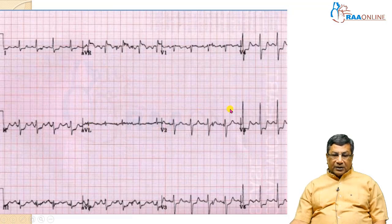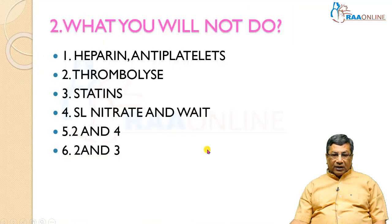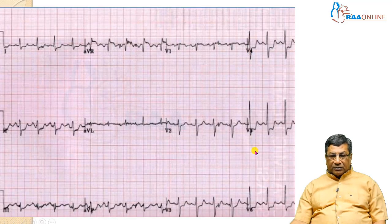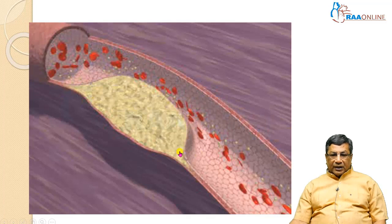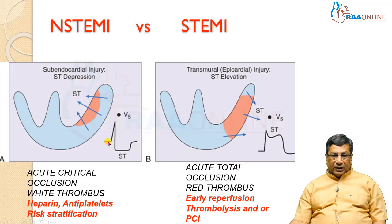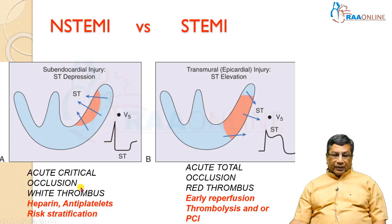Now showing an ECG of a patient with the same three hours of chest pain, but with ST segment depression — a non-ST elevation ACS. Options are: heparin, antiplatelets, thrombolysis, statins, sublingual nitrate, and watch. The key question is what you will NOT do. As discussed previously, when a patient has ST segment depression in non-ST elevation ACS, you should NOT thrombolyze. Non-ST elevation MI is due to sub-endocardial injury showing as ST depression, whereas ST elevation ACS is a total occlusion with red thrombus.